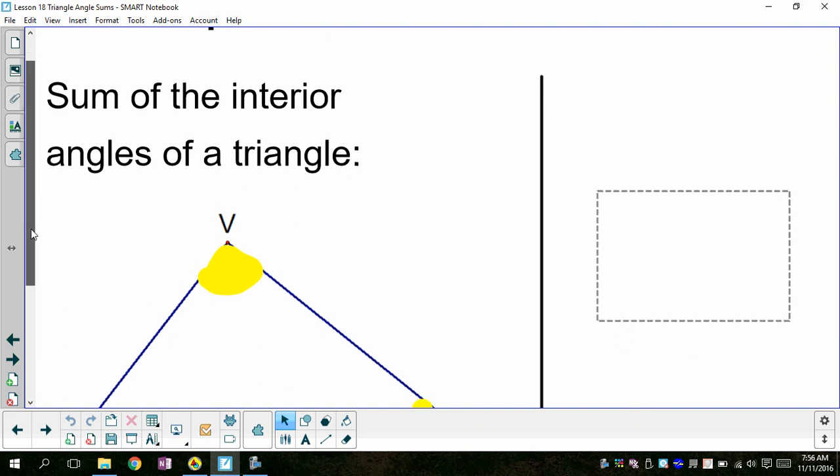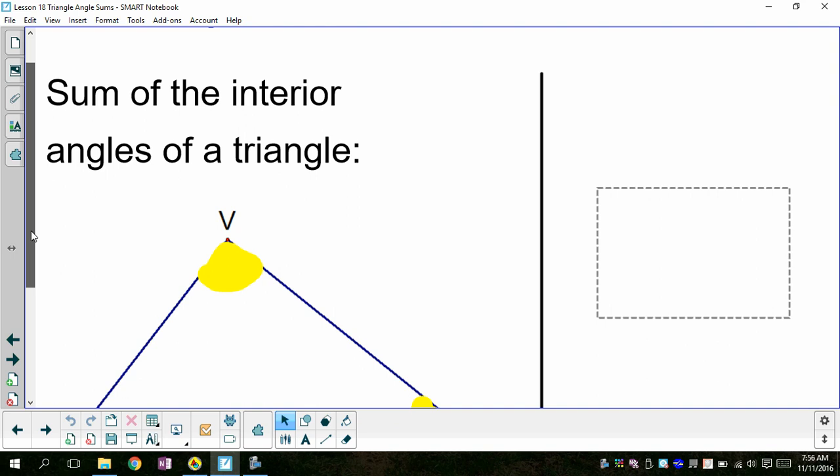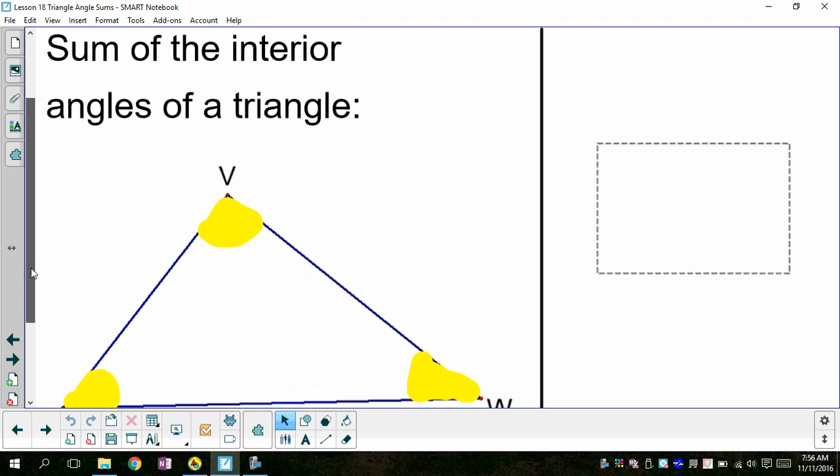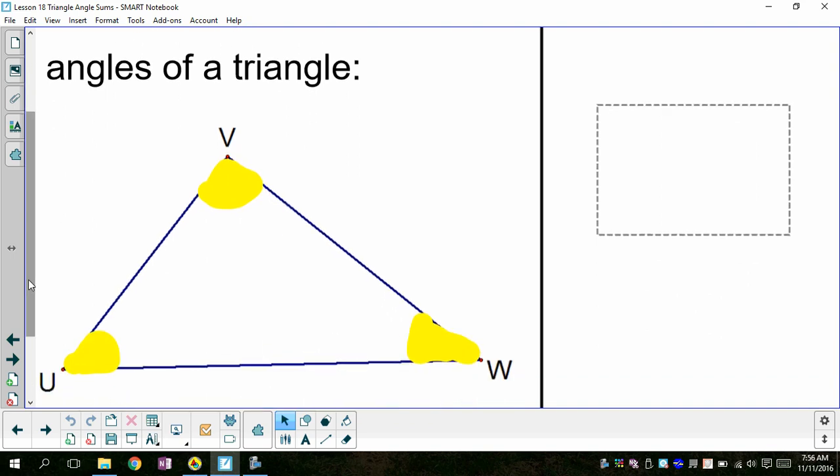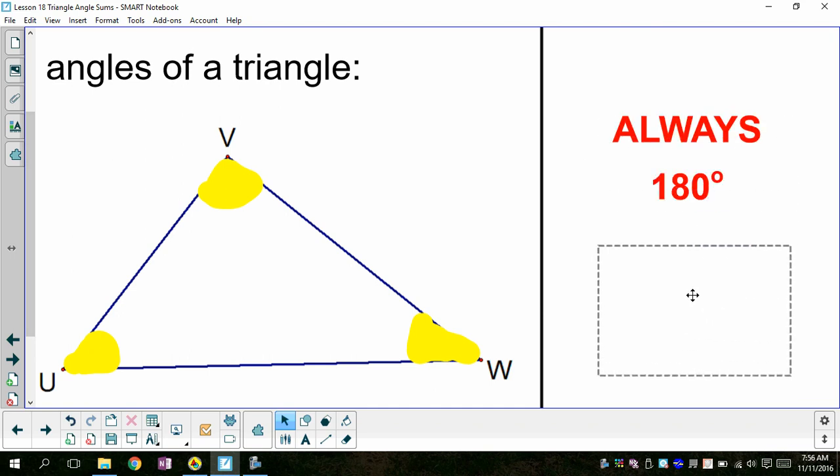So we're going to talk about if we take all the inside angles, the interior angles of a triangle, what they should add up to be. We had a formula when we talked about polygons that would tell us the sum of the interior angles of any polygon, but it's nice to remember just off the top of your head that the interior angles of a triangle always add up to 180.